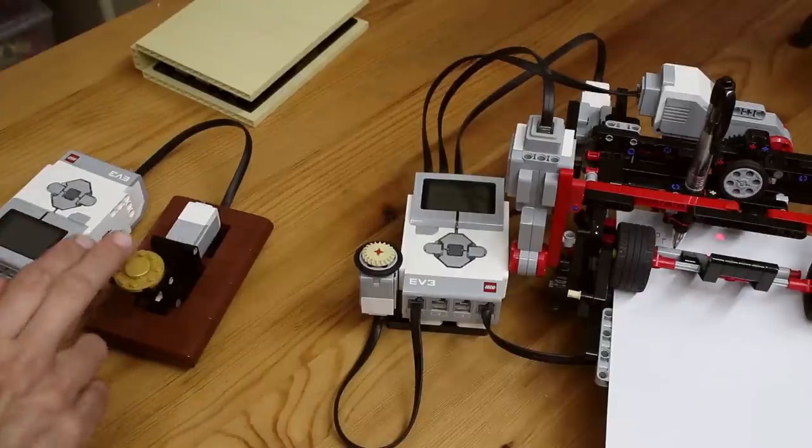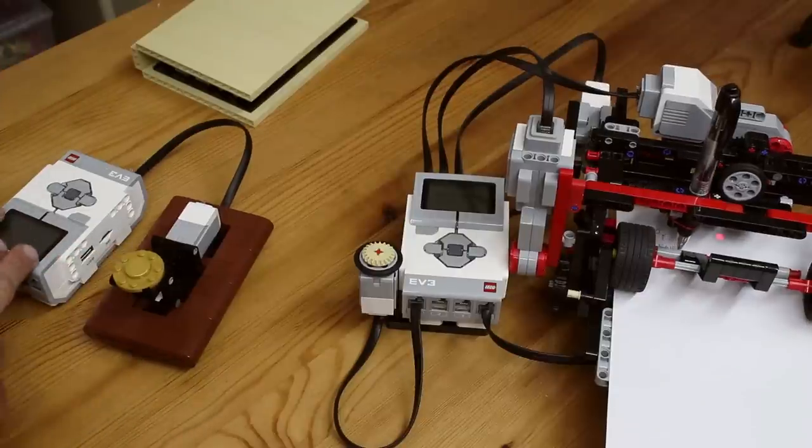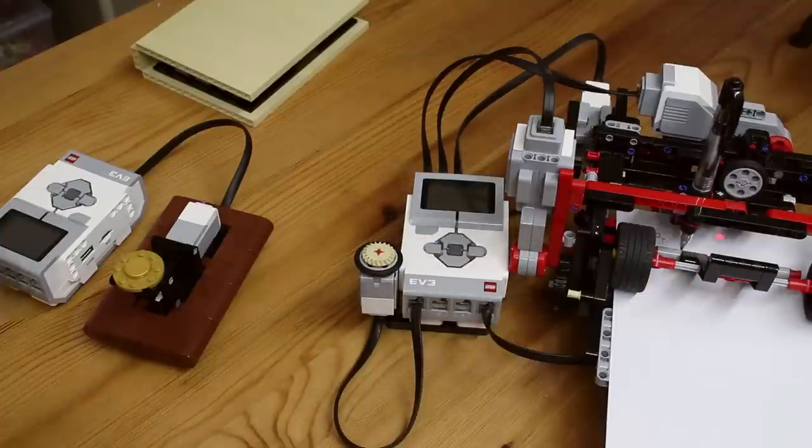So I can tap out a code here, this EV3 will encode it, send it to this one over Bluetooth, which will print it out on the printer.